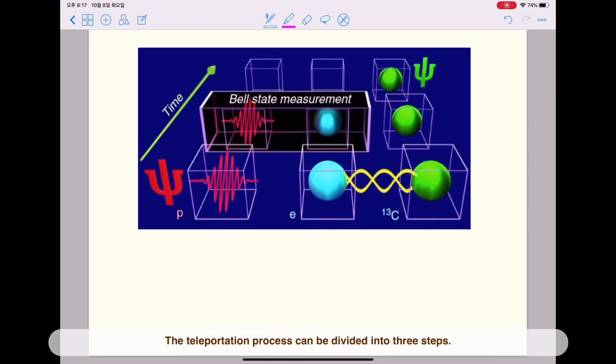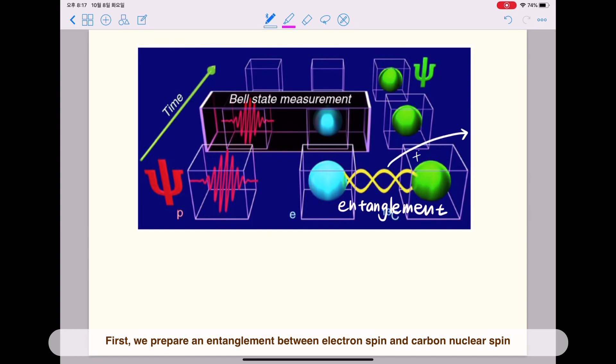The teleportation process can be divided into three steps. First, we prepare an entanglement between electron spin and carbon nuclear spin through an initializing process, which we will learn about more later.